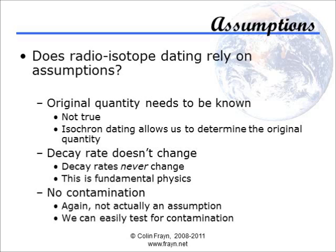The third assumption is that there's no contamination. Again, we can easily test for contamination. Isochron dating gives us a very good method for testing for contamination in our final sample. All our results should lie on a straight line on a graph comparing concentrations of the parent, daughter, and secondary daughter isotopes. If the points don't lie on a straight line, then we know that there's contamination in the sample. Most processes that could affect the sample during its lifetime will only give it a younger apparent age than the true value, therefore making the problem worse for young Earth creationists.